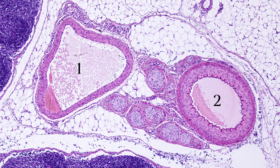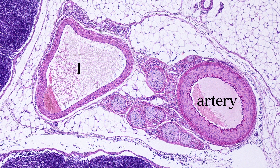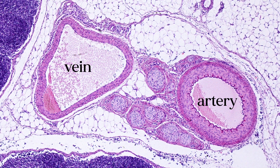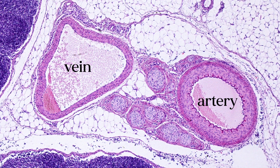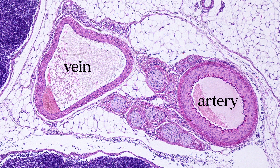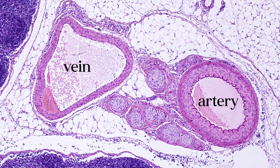Let's come back to the quiz from the beginning of the video. If you guessed that figure 2 was an artery and figure 1 was the vein, you're correct. We can tell because figure 2 has a much thicker tunica media, while figure 1 has a much larger lumen.